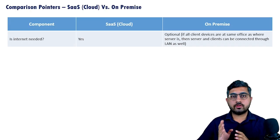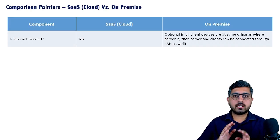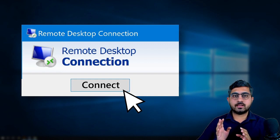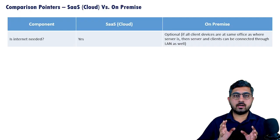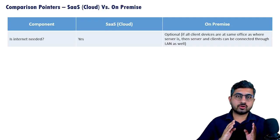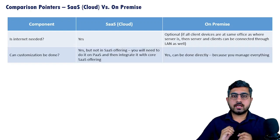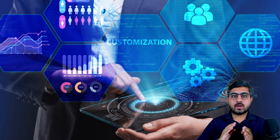The next comparison point is whether the internet is needed to access each type of software. For a cloud-based software, the internet is an essential and integral part — without internet, any SaaS-based application cannot work. On the other hand, for on-premise software, internet is not 100% required. Even if employees are working from home or a location different from where the back-end resides, internet may still be used, but it is not essential the way it is for SaaS.